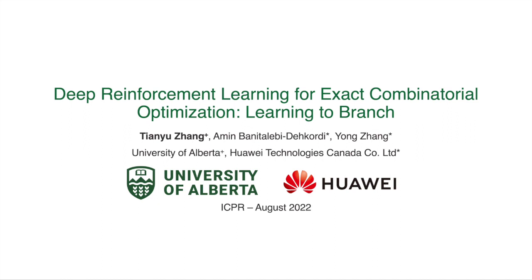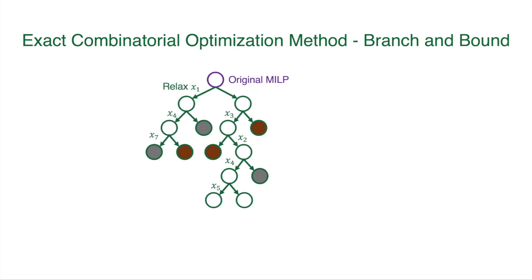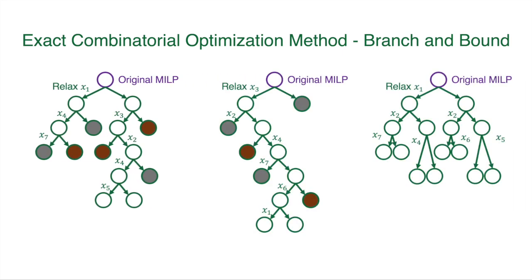Combinatorial optimization has long been a topic that attracts many researchers. It relates to various real-world problems, yet no efficient algorithm has been proposed. Branch and bound is one of the most popular exact combinatorial optimization methods. The idea is to generate a search tree by relaxing the integrality restrictions for selected variables on selected mixed integer linear programming problems.